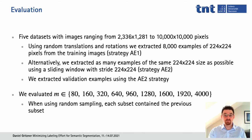When using random sampling, we made sure to always contain the previous subset. For example, if we used M equals 160, we made sure the first 80 examples were exactly the 80 examples chosen for M equals 80, and then added 80 additional images. To get to 320 images, we used the 160 we already had and added another 160, and so on. As a model, we used DeepLab version 3 plus with MobileNet version 2 as a backbone.